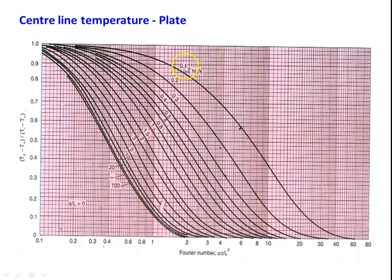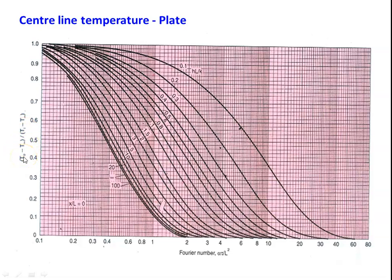Knowing the Biot number and the Fourier number, we can find the y-axis ratio (T_O − T∞)/(T_i − T∞) from the graph. The initial temperature and fluid temperature are given in the problem; you find the centerline temperature. Or sometimes the centerline temperature is given and you find the time required to reach it. There are three parameters — if any two are known, the third can be found.